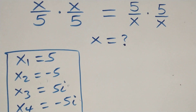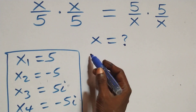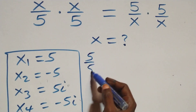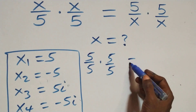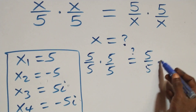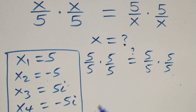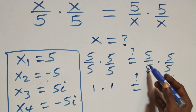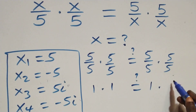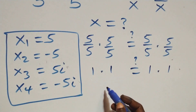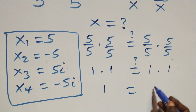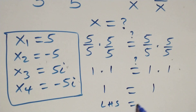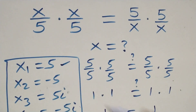Let's check whether x = 5 satisfies the given problem. Substituting: 5 over 5 times 5 over 5, is it equals to 5 over 5 times 5 over 5? We have 1 times 1 equals 1, which equals 1 times 1, also 1. Left hand side equals to the right hand side. Therefore, x equals to 5 satisfies this given problem.